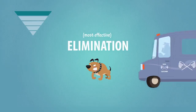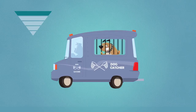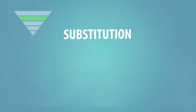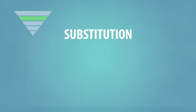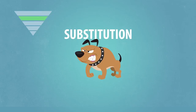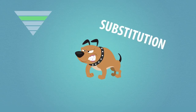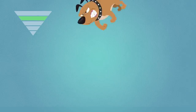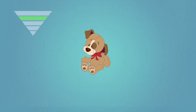Eliminating the hazard by physically removing it is the most effective hazard control. Substitution, the second most effective hazard control, involves replacing something that produces a hazard with something that does not produce a hazard.